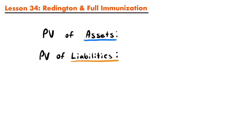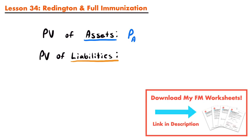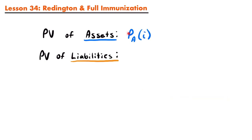For the present value of assets, we are going to denote that with capital P sub capital A of i — the present value of the assets as a function of i. And in the same way, we will represent the present value of the liabilities with capital P sub capital L of i, the present value of the liabilities as a function of i.